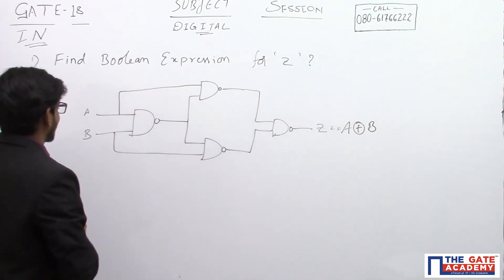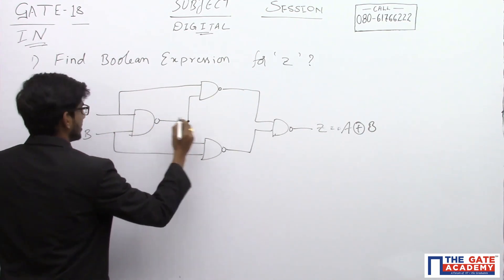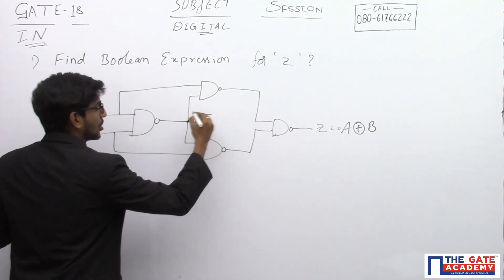Just check it. Here we will get A, B, whole bar.